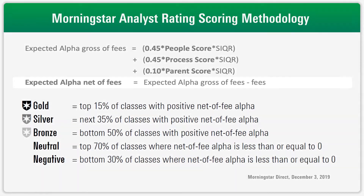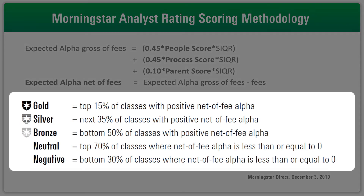It is this net-of-fee alpha that drives our fund ratings. You'll see here the distribution of our gold, silver, bronze, neutral, and negative ratings. The result of all this is actually a much more explicit focus on the price pillar. By subtracting the management expense ratio from the underlying people, process, and parent combination, Morningstar is able to clearly rate different share classes of funds, which at the end of the day is what matters most to investors since you're being charged for the share class that you're invested in.